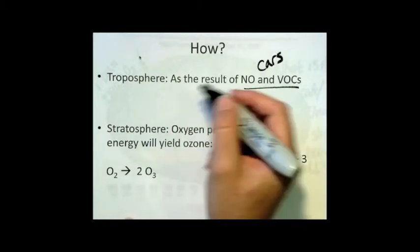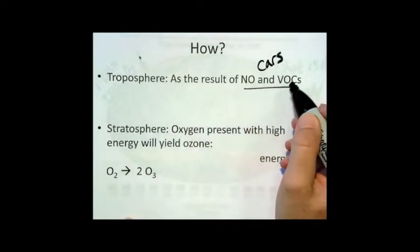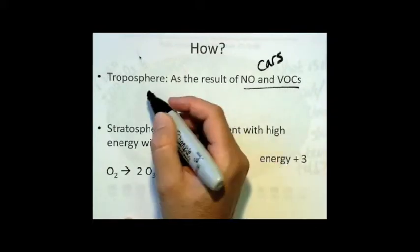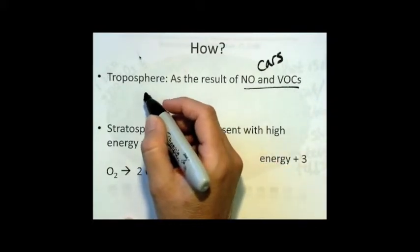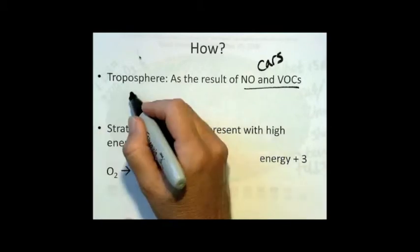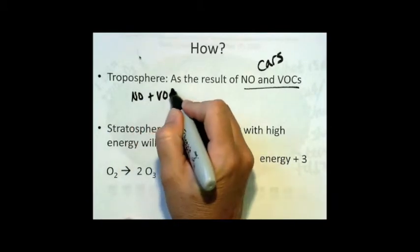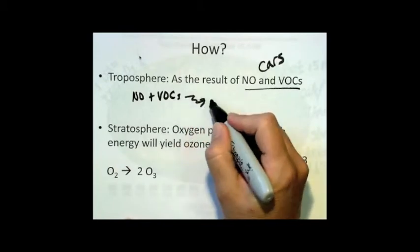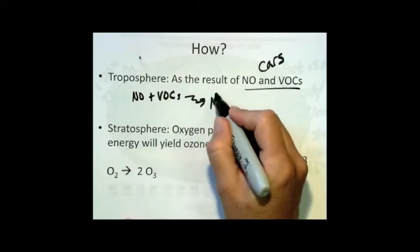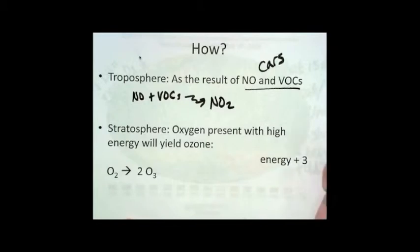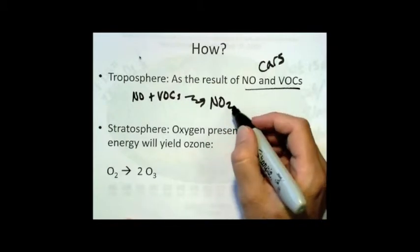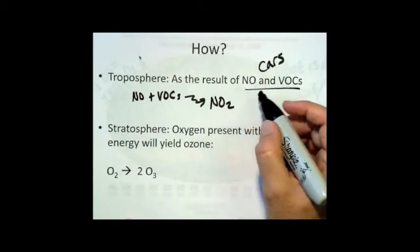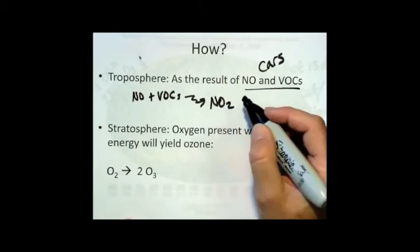And then once those nitric oxides and volatile organic compounds get into the air, there was a complicated series of reactions between the nitric oxide and the VOCs that I'm not going to go into. It was about three reactions that led to the production of nitrogen dioxide, that nasty pollutant that contributes to smog.